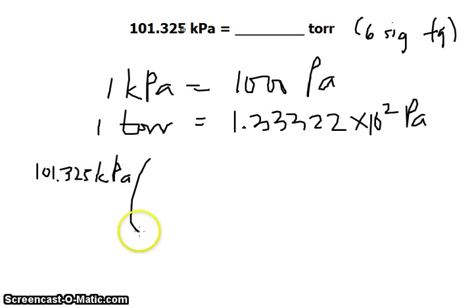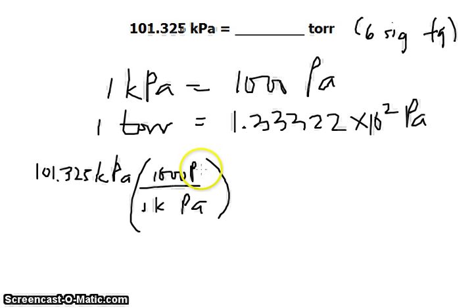Then we multiply it by our conversion factor, cancelling out the units: 1 kilopascal at the bottom and 1000 pascals in the numerator. This cancels out, leaving us with the unit in pascals, which also has to cancel out.